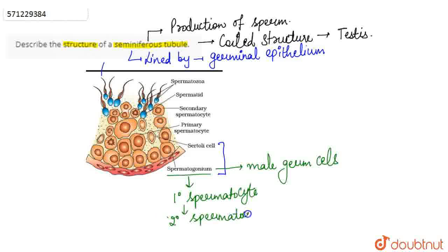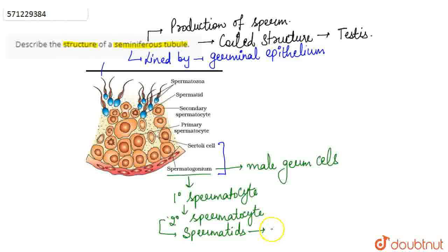Once the secondary spermatocytes are formed, we can see that the spermatogonium has undergone meiotic division to form the primary spermatocyte, and then the primary spermatocyte also undergoes meiotic division to form the secondary spermatocyte. From the secondary spermatocyte, by certain differentiation and development, spermatids are formed. These spermatids then differentiate to form the male gamete — that is the sperm. This is how sperm are developed from the spermatogonium through several stages of cell division.